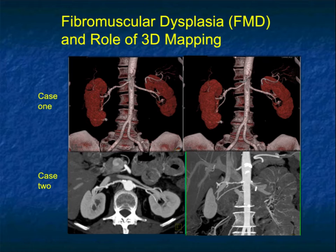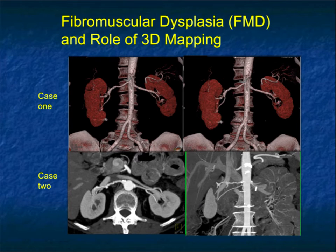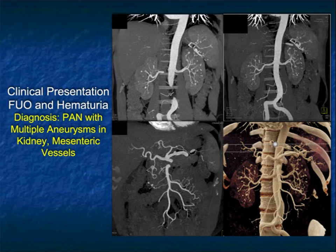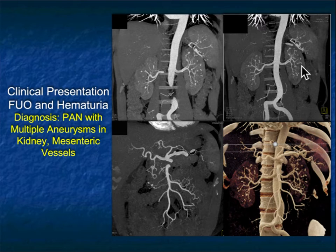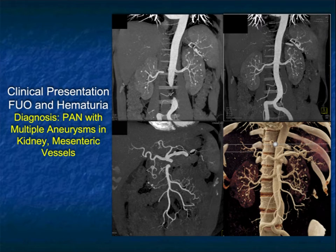We are seeing more patients with known or suspected FMD — fibromuscular dysplasia. You can see the beading of the right renal artery on volume rendering, and in a second case also beading of a good portion of the right renal artery. FMD can be bilateral, unilateral, segmental, or involve the entire vessel. In another patient with FUO and hematuria, careful review of MIP and cinematic imaging revealed multiple small pseudoaneurysms in the renal arteries and splenic arteries, as well as branches of the SMA — diagnosing polyarteritis nodosa.